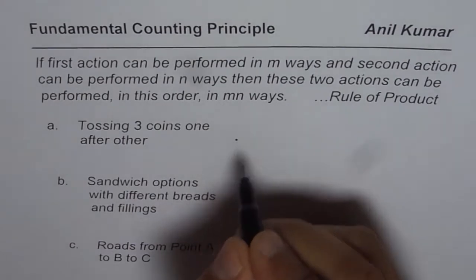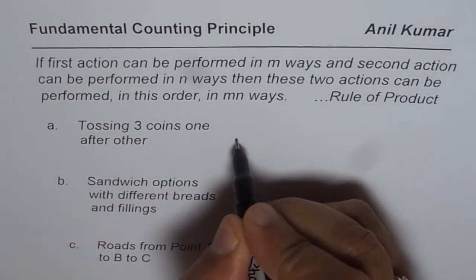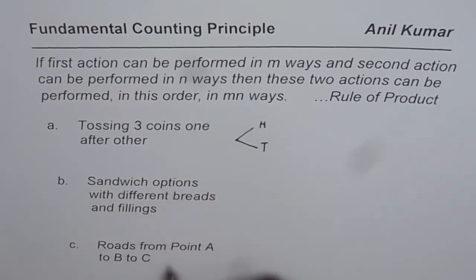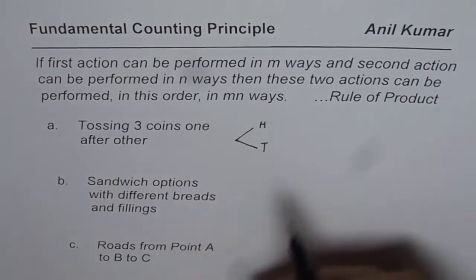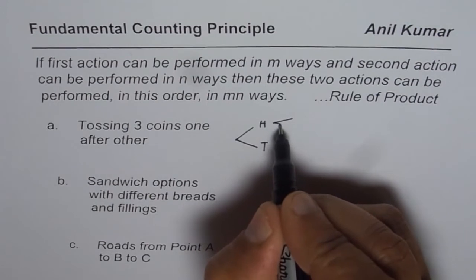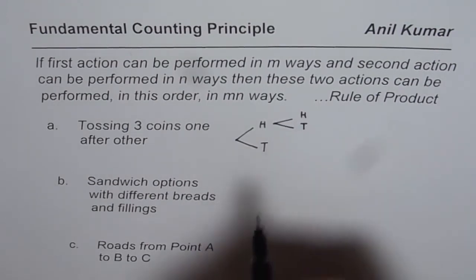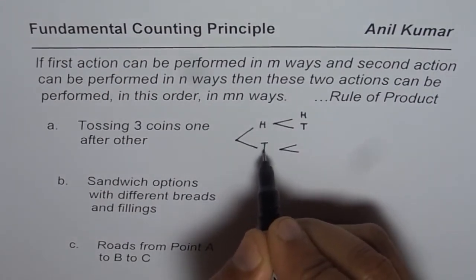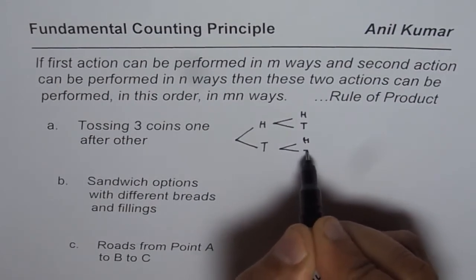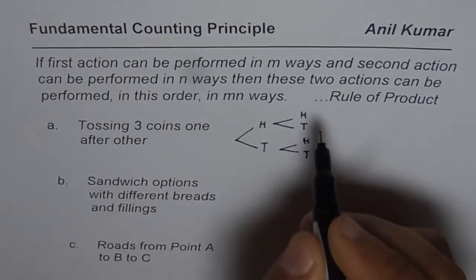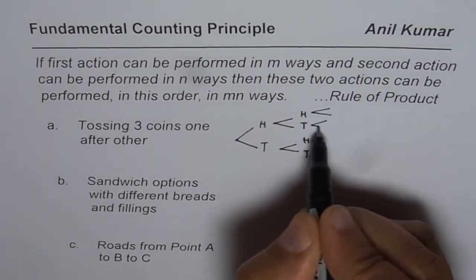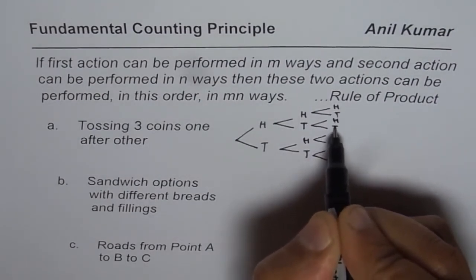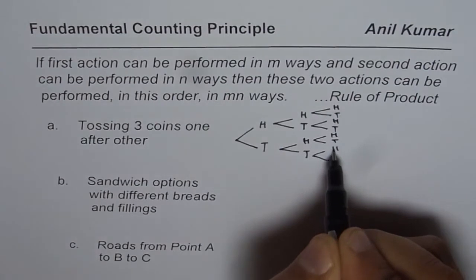So what happens? Let's say I have three coins and I toss them one after another. For the first coin, the possibility is you could get either heads or tails. When you toss the second coin, again the possibility is heads or tails. In the first there were two possibilities, so in the second, whether you got heads or tails first, the possibility is again heads or tails. For the third toss, again two more possibilities — heads or tails.